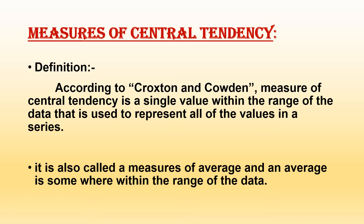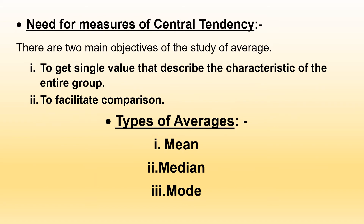First, let's see what Measures of Central Tendency is. According to Croxton and Coudan, Measures of Central Tendency is a single value within the range of the data that is used to represent all of the values in a series. It is also called a Measure of Average, and an average is somewhere within the range of the data. It represents mainly two objectives: to get a single value that describes the characteristic of the entire group of data, and to facilitate comparison.